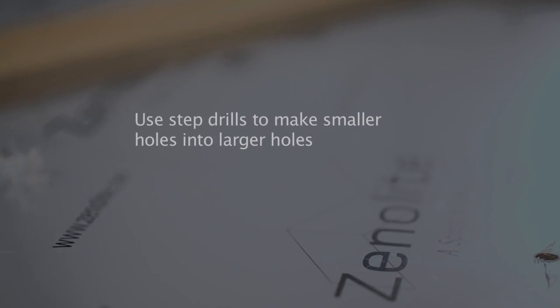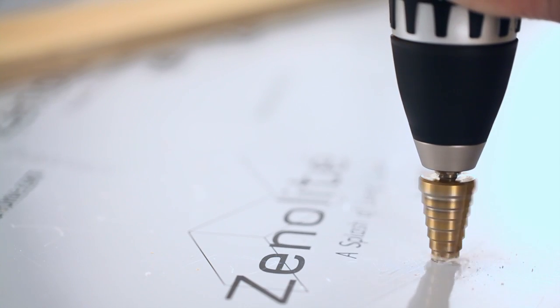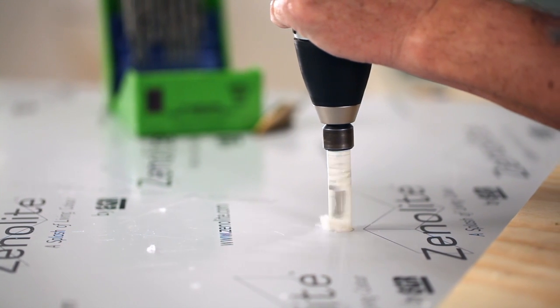To make smaller holes into larger ones, use a step drill bit at a slow to medium speed. It's best to use a fine toothed hole saw for larger holes.